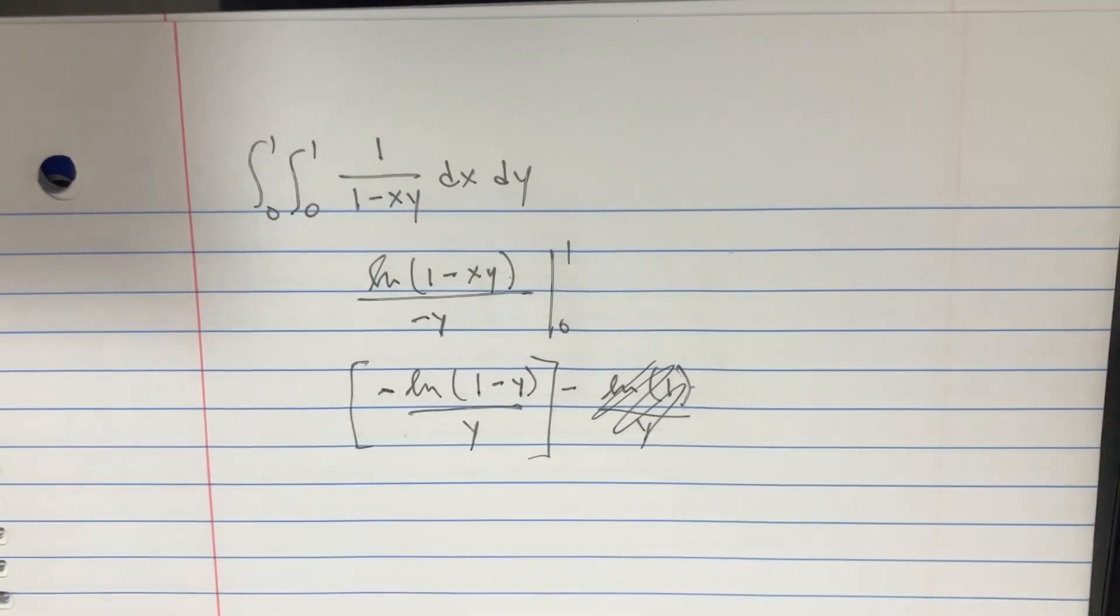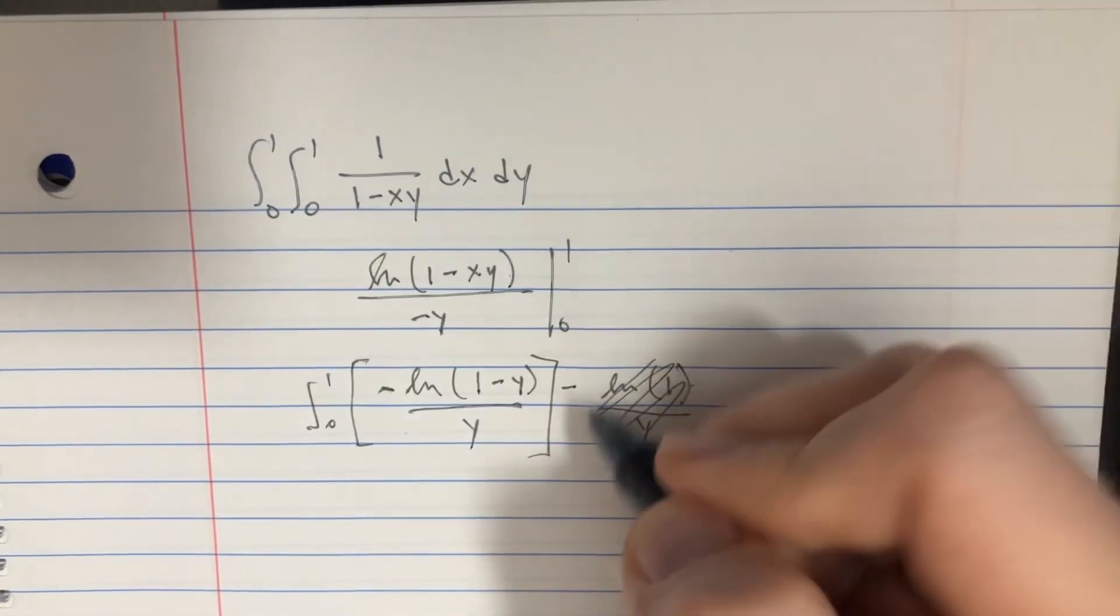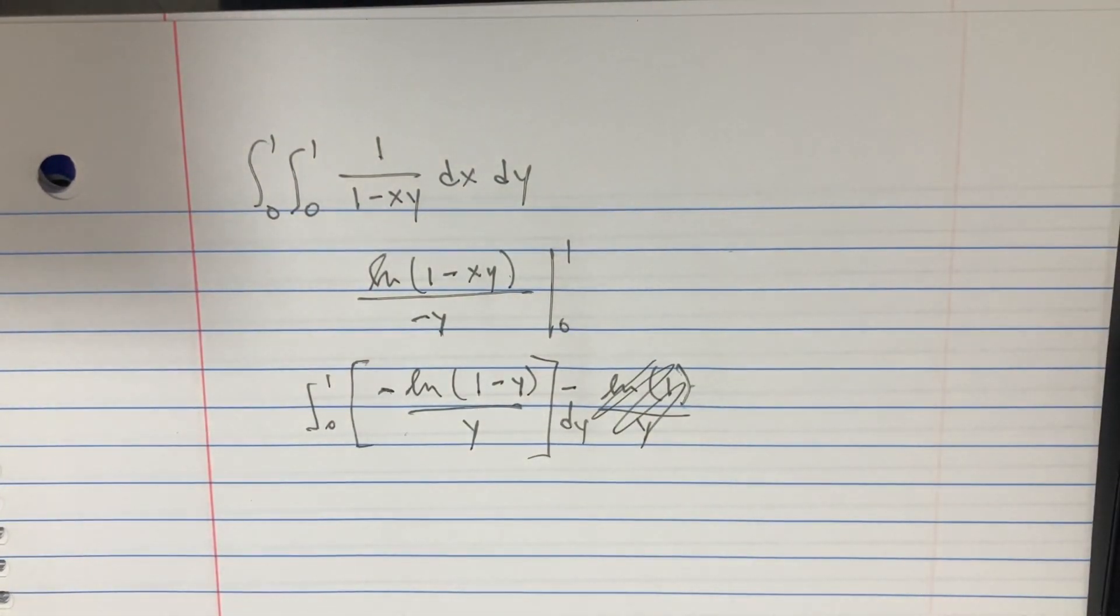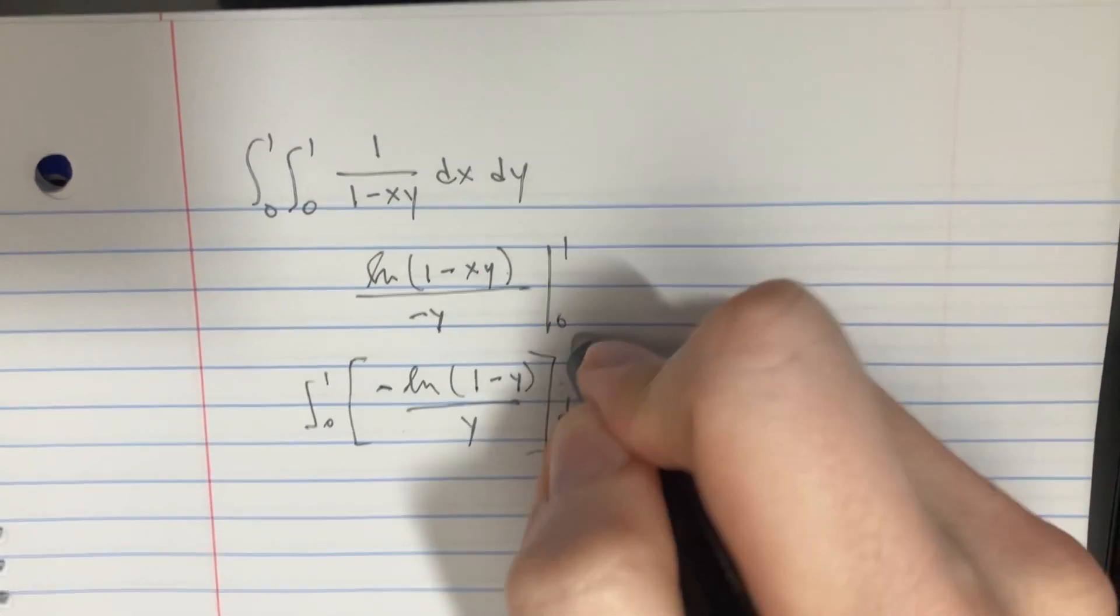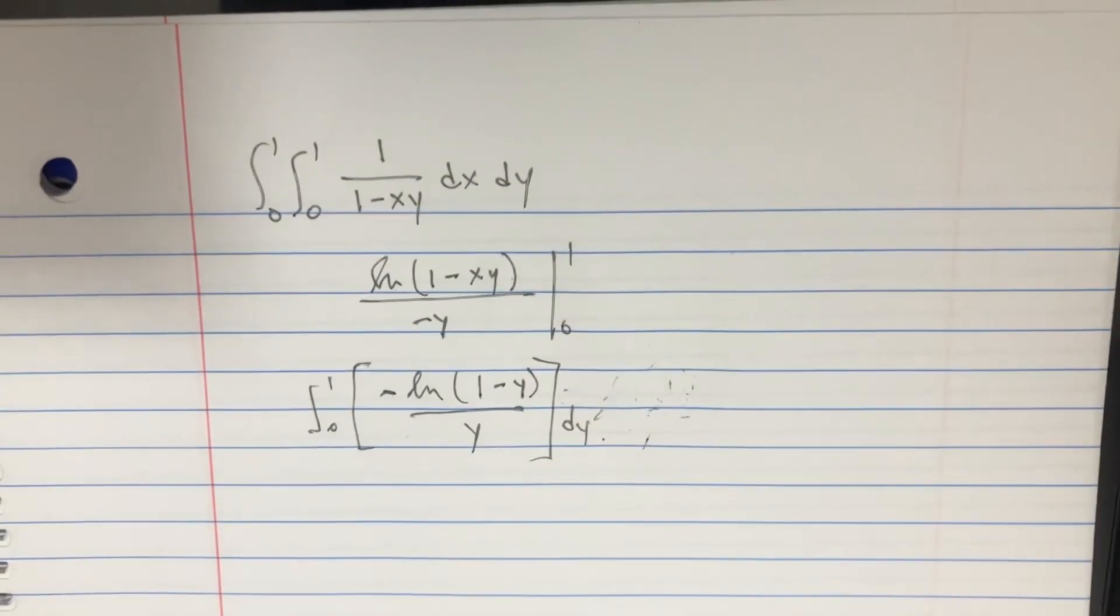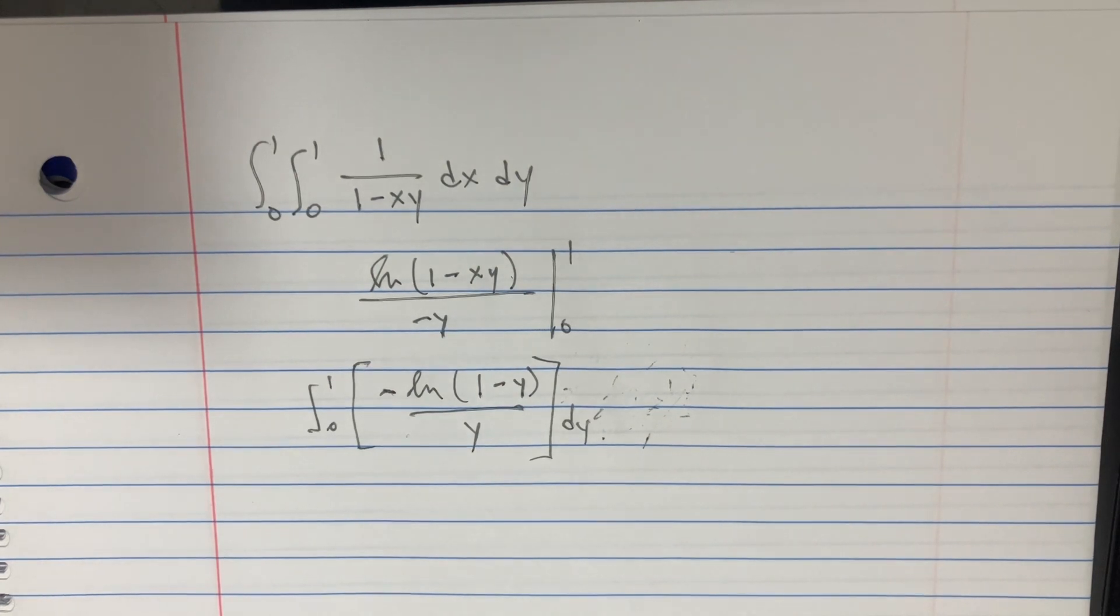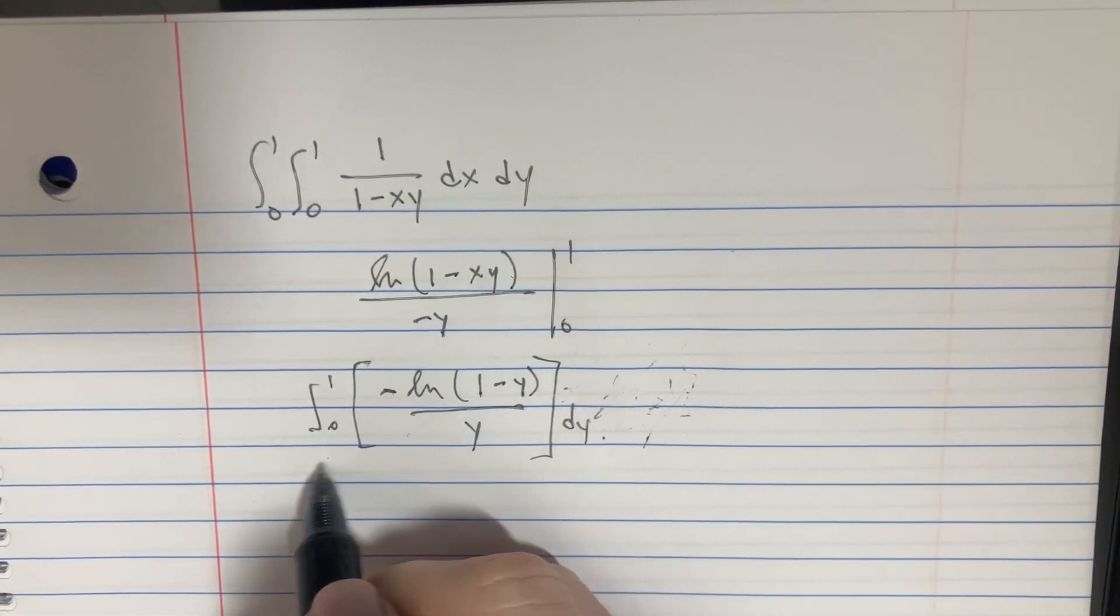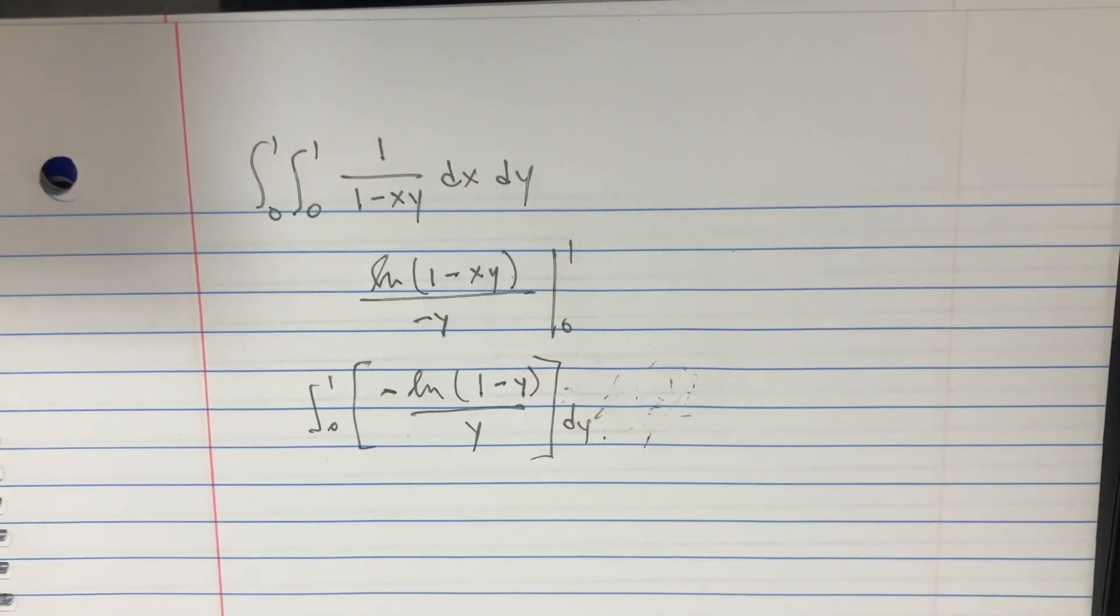We kind of start with this, right, and then we're saying, okay, well, let's go 0 to 1 dy, because we're going to integrate that now, and that would be a really hard integral, so I don't know if we can really even do that one, but we're given a little hint in some of these answers.